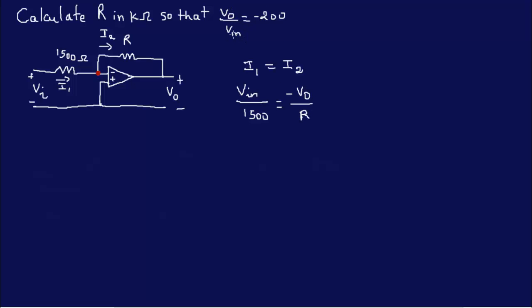The gain is V0 over Vn, it is minus 200. So if we divide this, if we have V0 over Vn is the same thing as having R over 1500, and this is equal to minus 200.